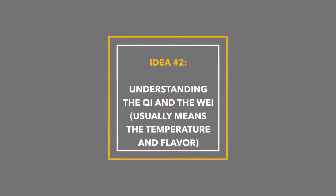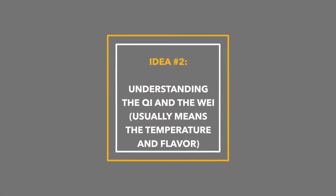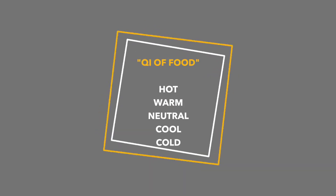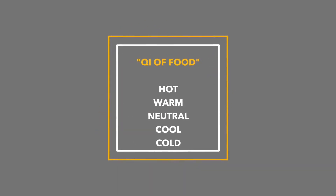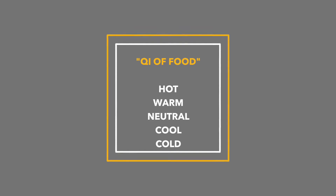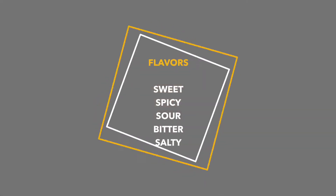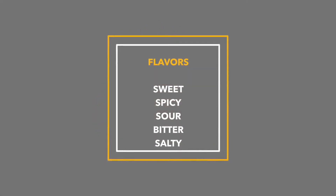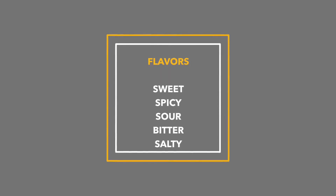The first concept here is understanding the energetics of food — really just understanding the chi and the flavor. The chi is typically the temperature of the food, and the flavor refers to the five flavors we just talked about. The chi could be hot, warm, neutral, cool, or cold. And the flavors are typically sweet, spicy, sour, bitter, and salty.